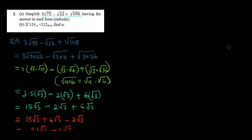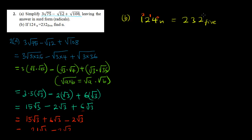For the next part, we are asked to find n if 124 base n equals 232 base 5. We're looking for the base of 124, which we call n. We assign positional powers starting from zero on the right: so 4 gets power zero, 2 gets power one, and 1 gets power two. The same applies to 232 base 5.